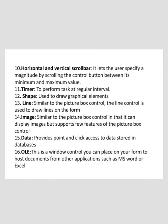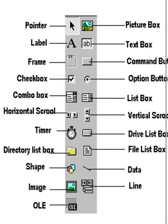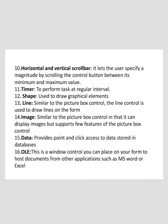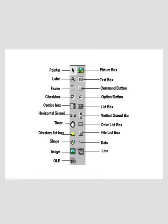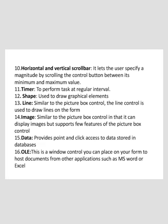The next option is the Horizontal and Vertical Scroll Bar. It lets the user specify a magnitude by scrolling the control's button between its minimum and maximum value. The next is the Timer. Its function is to perform tasks at regular intervals. The main property is Interval, which determines how often the timer notifies your application.